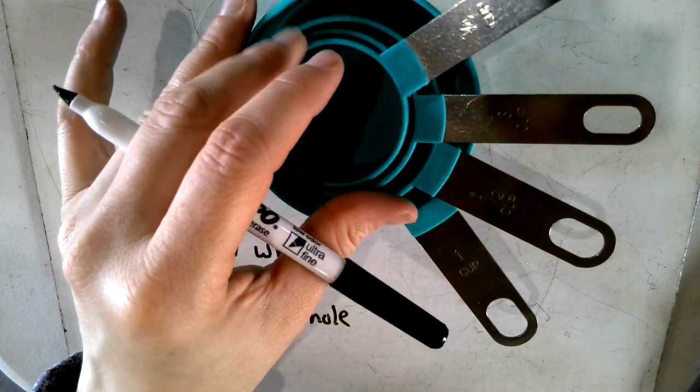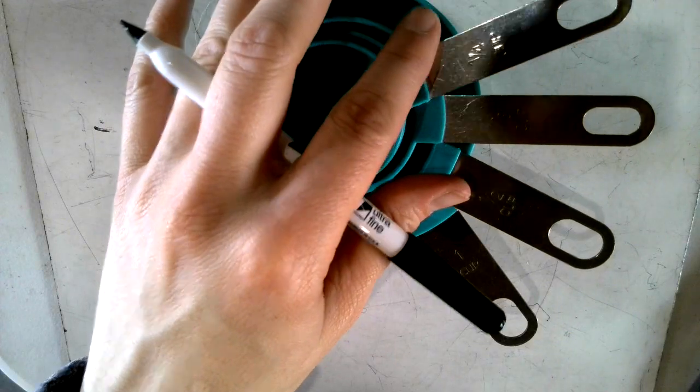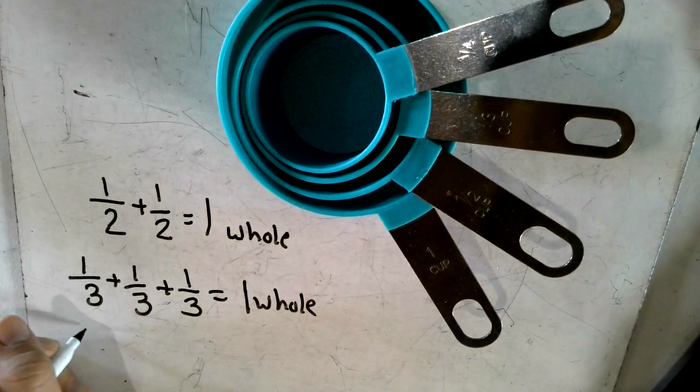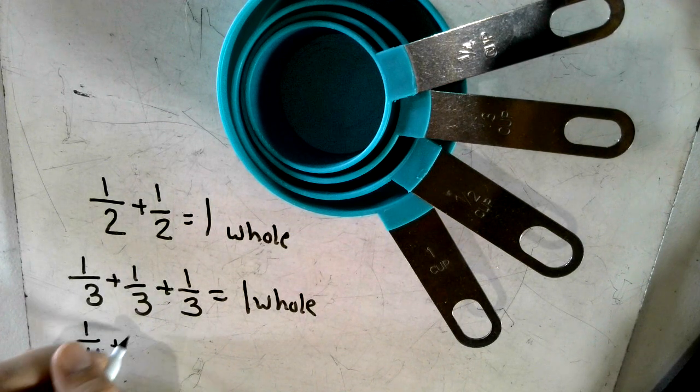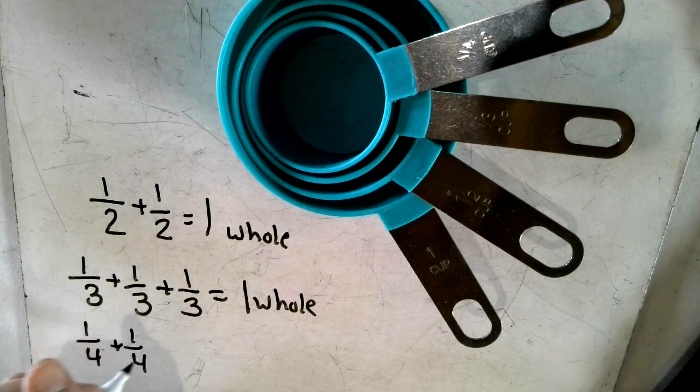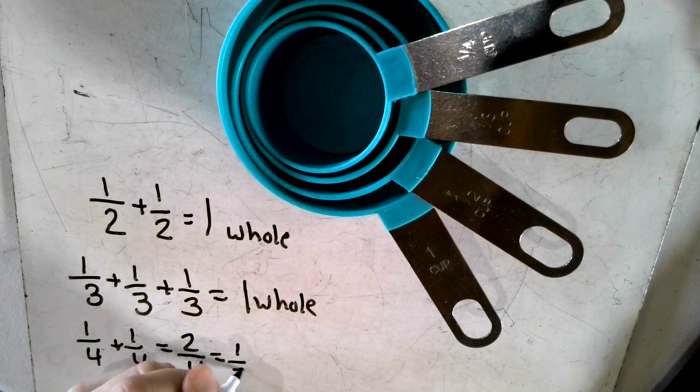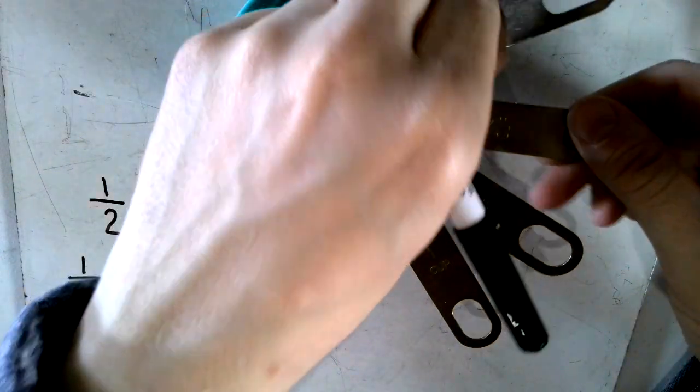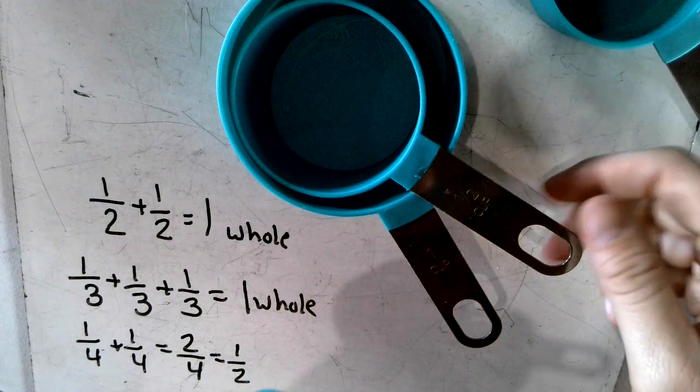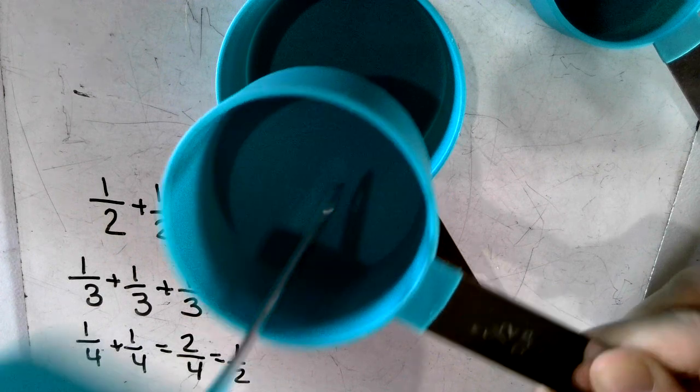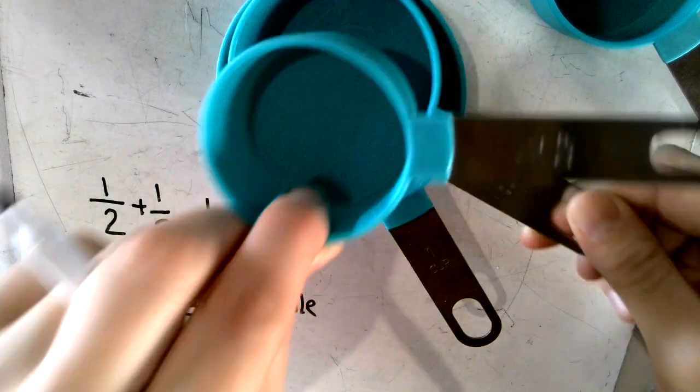So the fourth cup. We have a fourth plus a fourth plus a fourth, that equals two fourths, which equals one half. So this cup, two of this cup makes that cup.